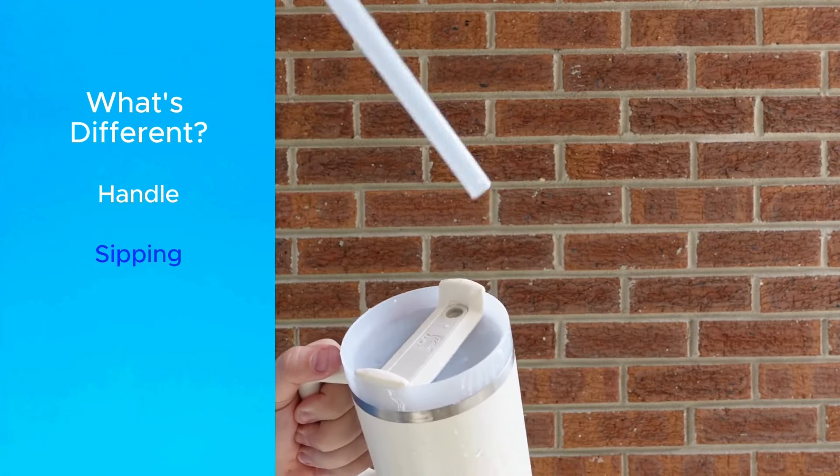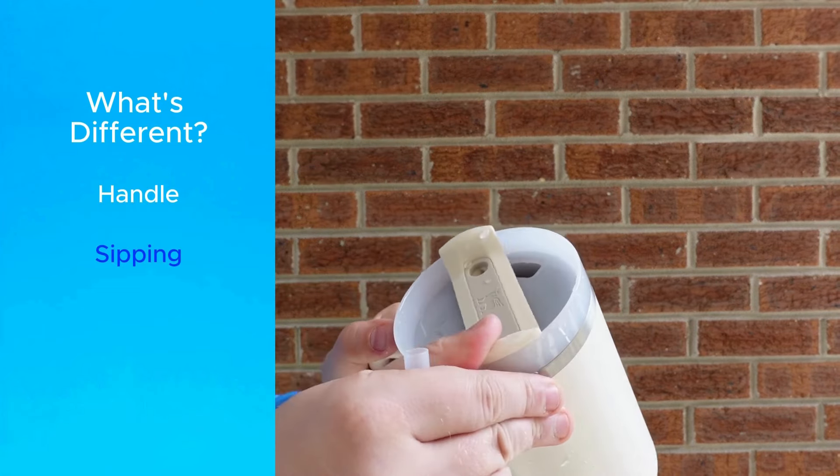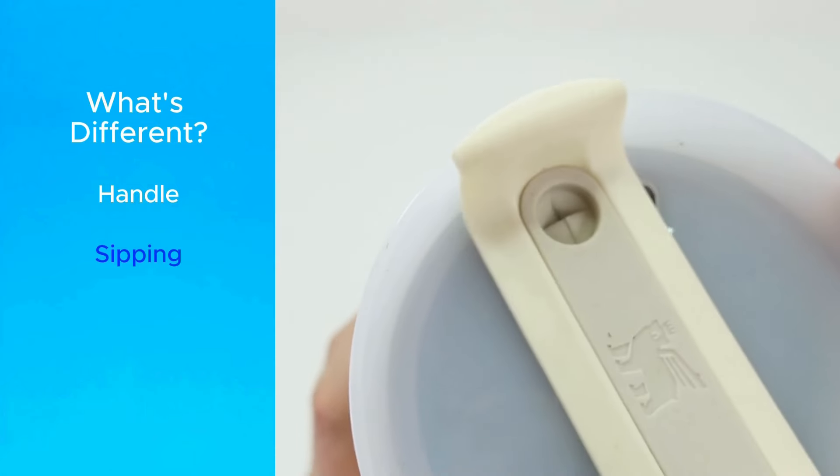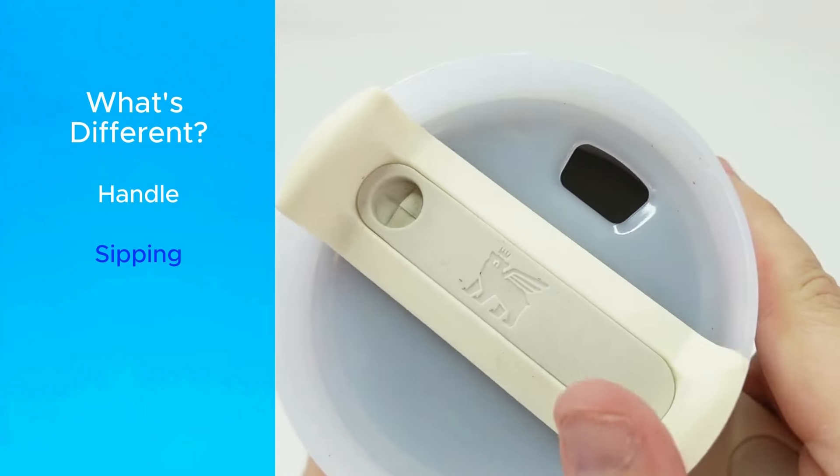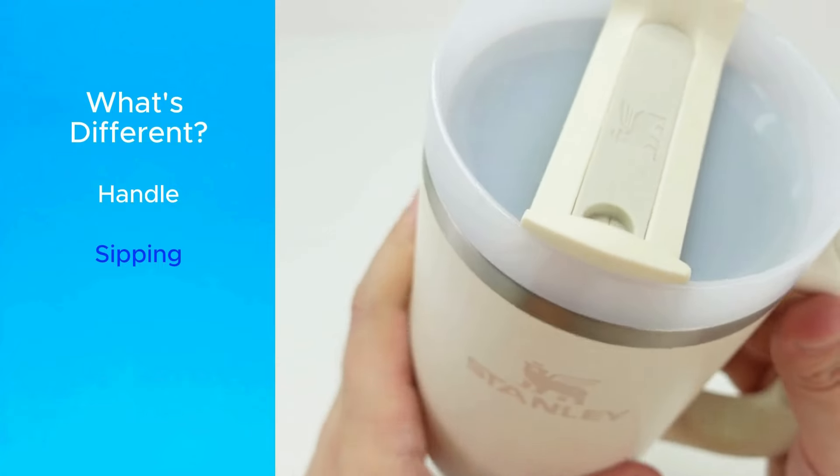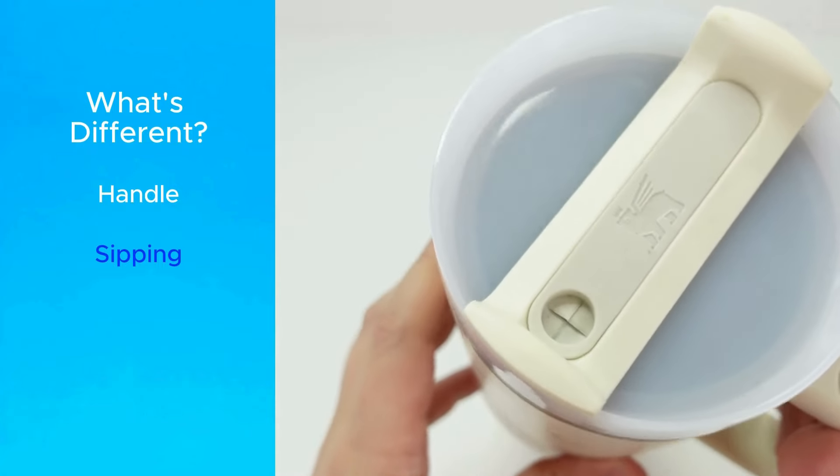The second difference is the ability to use it like a sip-style lid. On Quenchers, you can rotate this piece on top when you don't have the straw in, and this lets you open it to take sips. You can also rotate it to be closed, but more on that in a second. I think most people use the straw anyways, but it's still a notable difference.